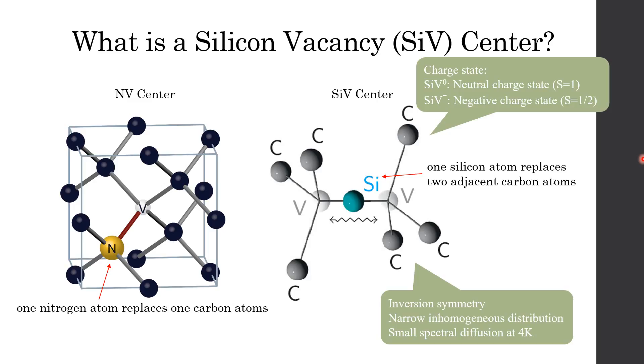First, let's talk about what is a diamond silicon vacancy. Silicon vacancy center is a kind of colored center in diamond, but unlike NV center which we have learned in the class. Silicon vacancy center is when a silicon atom replaces two adjacent carbon atoms in diamond lattice and forms a split vacancy structure as shown in the figure.